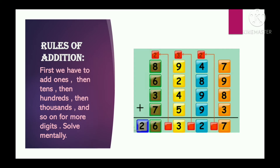Now we have to add the tens place. So we add 4, 8, 9 and 9, and with this we also add the carry we were given. After adding we get 32. We write 2 below the tens place and give 3 as carry over the hundreds place.